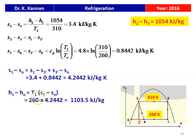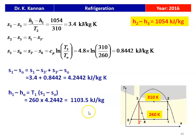H1 minus H0 equals T1 multiplied by (S1 minus S0), which is 260 multiplied by 4.2442, equal to 1103.5 kJ/kg. This is the answer. H1 corresponds to the wet vapor of the refrigerant and H0 corresponds to the saturated liquid at 260 Kelvin.